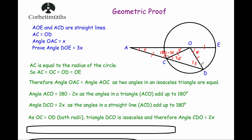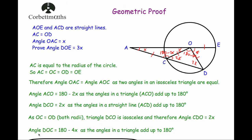We now have that the two base angles of triangle DCO are both 2x. To find the missing angle at the top, we take 2x plus 2x — which is 4x — away from 180 degrees, leaving 180 degrees minus 4x. So angle DOC equals 180 degrees minus 4x, as the angles in a triangle add up to 180 degrees. Finally, to find angle DOE, we know the angles on the straight line AOE add up to 180 degrees — one angle is x and another is 180 degrees minus 4x.